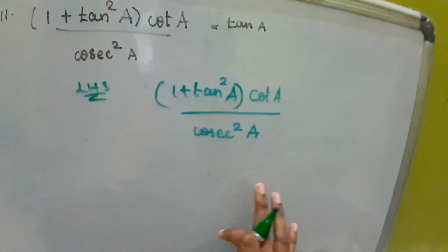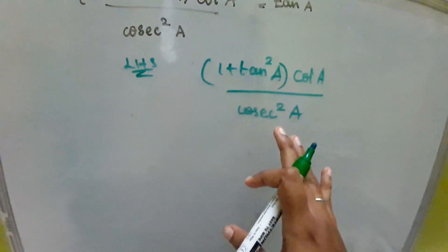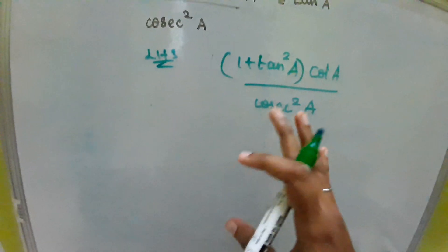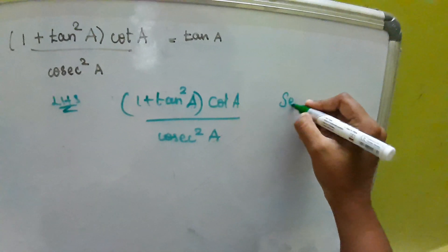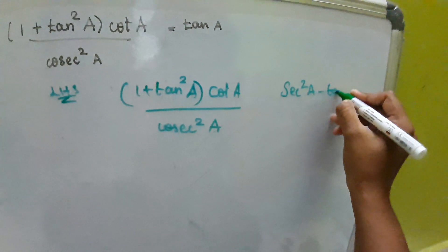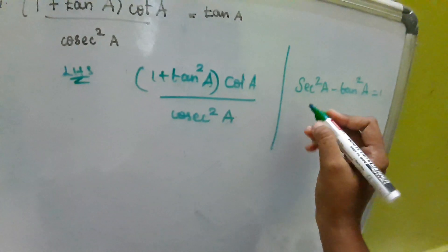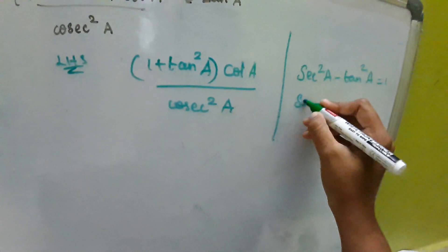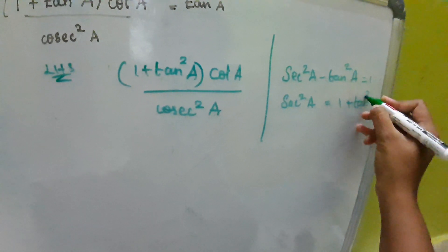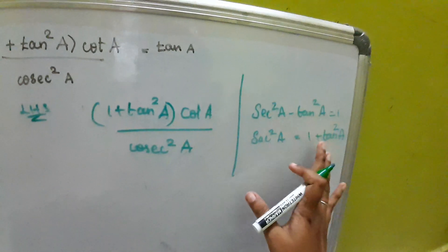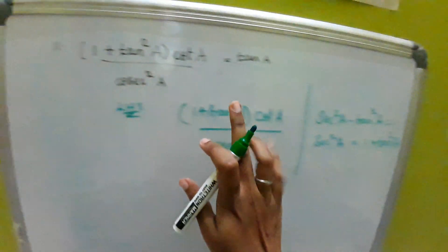Taking the LHS: 1 plus tan squared a, into cot a, divided by cosecant squared a. Instead of 1 plus tan squared a, I'm going to use the formula: secant squared a minus tan squared a equals 1. From this, secant squared a equals 1 plus tan squared a. So we replace 1 plus tan squared a with secant squared a.